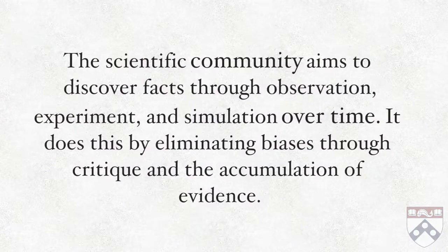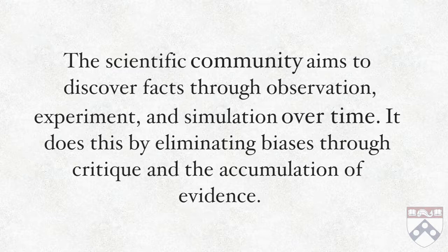So here is a final revision to our claim about scientific objectivity: the scientific community aims to discover facts through observation, experiment, and simulation over time, and it does this by eliminating biases through critique and the accumulation of evidence. This is an accurate and realistic statement of scientific objectivity. It makes objectivity an aim, it puts the locus of objectivity in the scientific community, and it suggests that the community has to revise its beliefs through time in order to make science better. Now, how exactly does the scientific community achieve this? That's what we'll talk about in the next part.